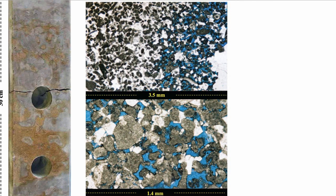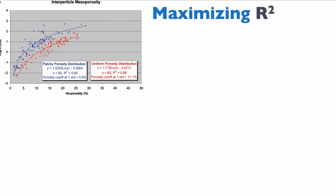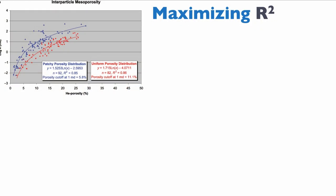The value of this classification comes when you look at the petrophysical characteristics of these different classes. For instance, looking at interparticle mesoporosity across about 2,000 samples — mostly from North Africa but from all around the world — you can see that the permeability prediction based on porosity is pretty good. There is a difference if you look at interparticle mesoporosity with patchy distribution versus uniform distribution, making that distinction allows Lenoir to be more accurate and maximize his square R, his Pearson coefficient.